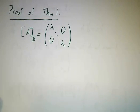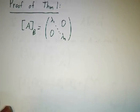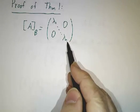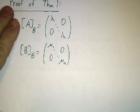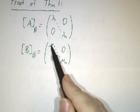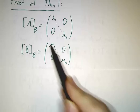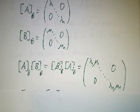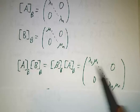So, let's suppose that things are simultaneously diagonalizable. Then A in the B basis is a diagonal matrix. B in the B basis is also a diagonal matrix. It's different entries, but they're both diagonal matrices. And if you multiply diagonal matrices in either order, you get the same thing.